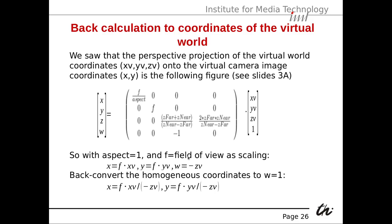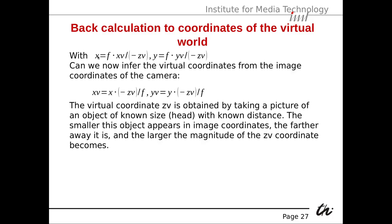With an aspect ratio of 1 and F equals field of view as scaling, we get a simplified equation: X equals F times XV, Y equals F times YV, and W equals minus ZV, where XV, YV, ZV are the virtual world coordinates. We then back-convert the homogeneous coordinates with W equals 1 — we divide by W and get the coordinates in our camera, the non-homogeneous coordinates. So we now have the connection between camera image coordinates, frame coordinates, and 3D world coordinates.